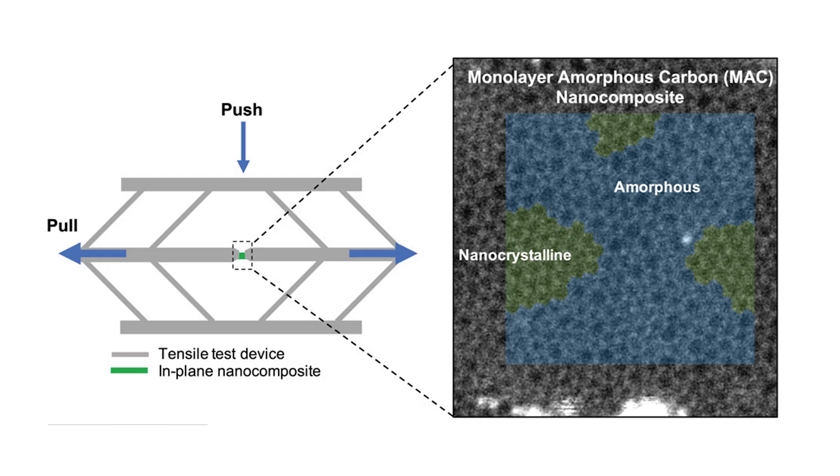Inside the amorphous region, the defects slow the crack tip, bridging and branching it, which matches up with real physical observations. And they found that by changing the ratio of amorphous to crystalline regions, you can tune how tough the final monolayer is.